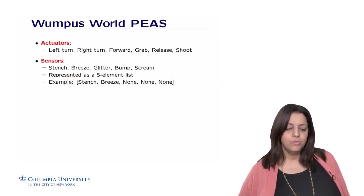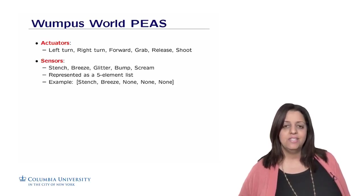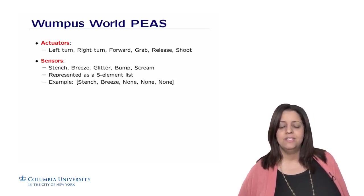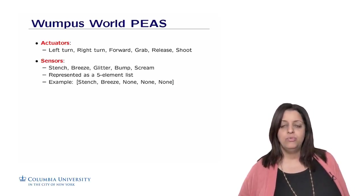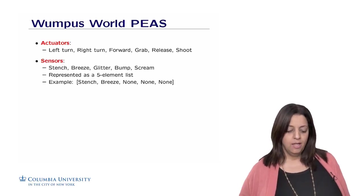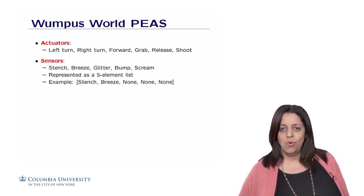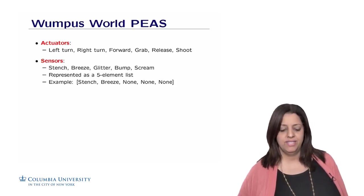The actuators are left turn, right turn, forward, grab, release, and shoot. The sensors will be stench if there is a Wumpus in one of the adjacent rooms, a breeze if there is a pit, a glitter if there is gold in the room, a bump if the agent is facing a wall and trying to go forward, and a scream if the Wumpus is killed.